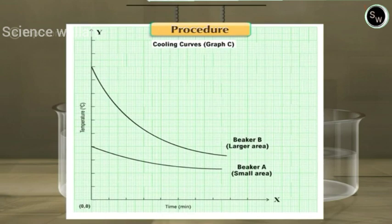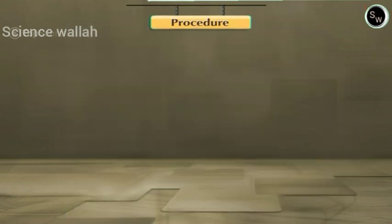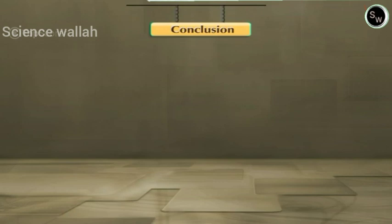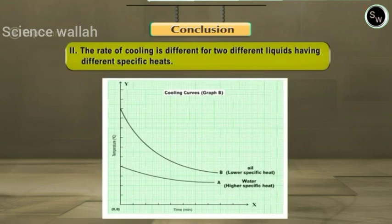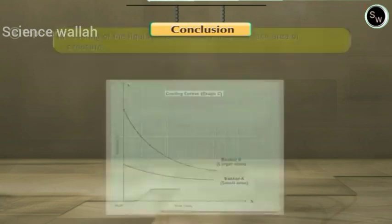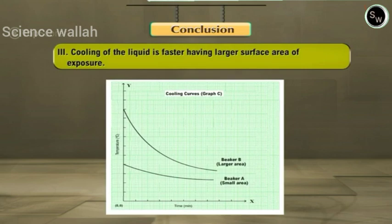Conclusion: From the graphs A, B, and C, we can make conclusions that: 1) The rate of cooling of a liquid is directly proportional to the temperature difference of the liquid with surrounding. 2) The rate of cooling is different for two different liquids having different specific heats. 3) Cooling of the liquid is faster having larger surface area of exposure.